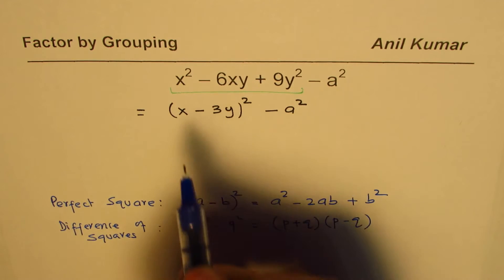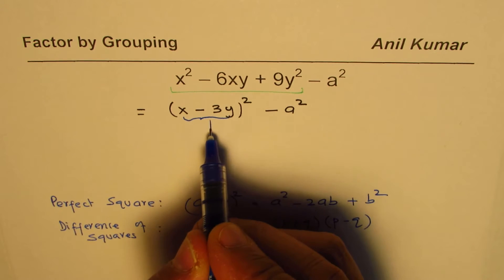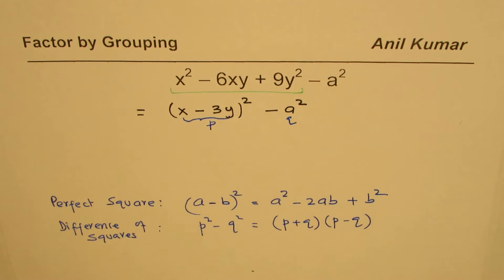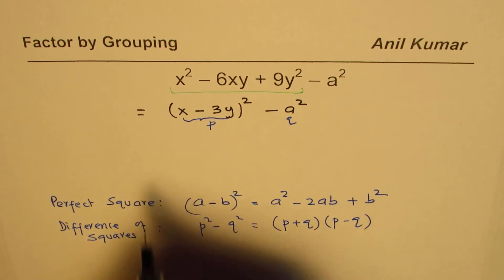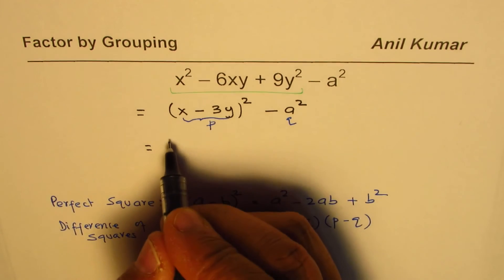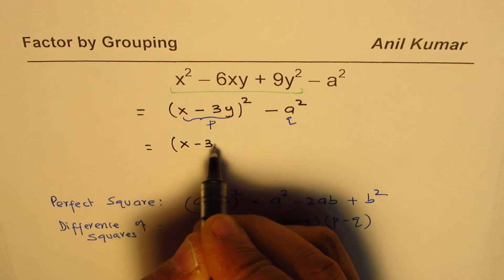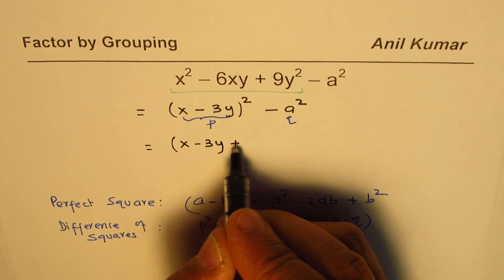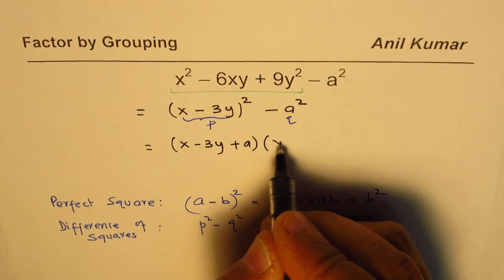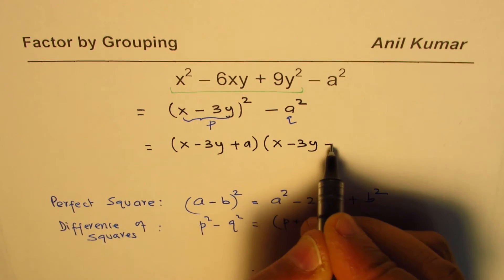In this case, this term could be treated as p and this term as q. So applying the difference of squares, we get x minus 3y plus a times x minus 3y minus a.